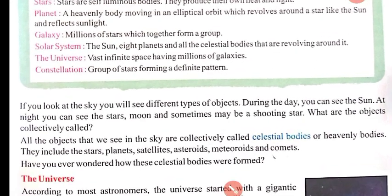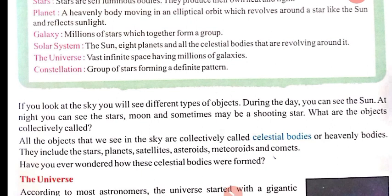If you look at the sky, you will see different types of objects. Like during the day, you can see the sun. At night, you can see the stars, moon, and sometimes maybe a shooting star. Isi tarike se raat mein, aapko dikhaayi denge — stars yani taare, moon yani chandrama, aur sometimes shooting star, chhootata hua tara bhi.